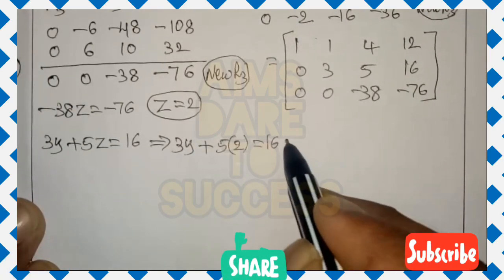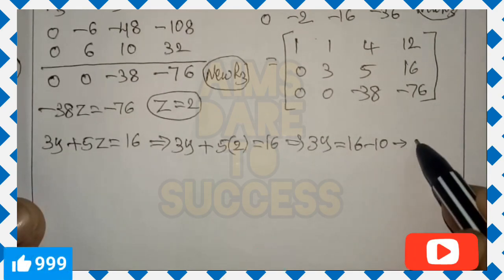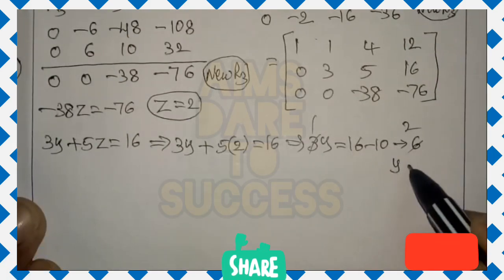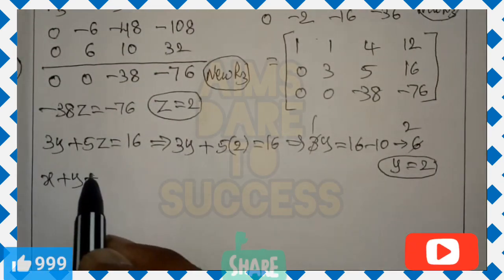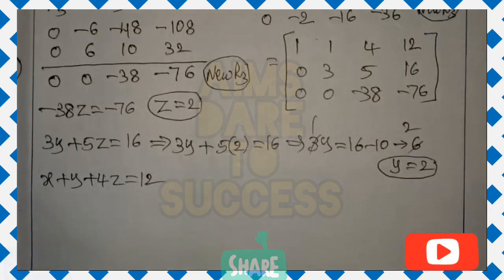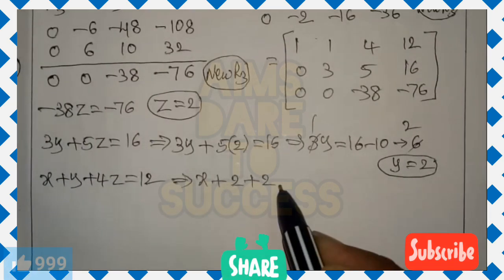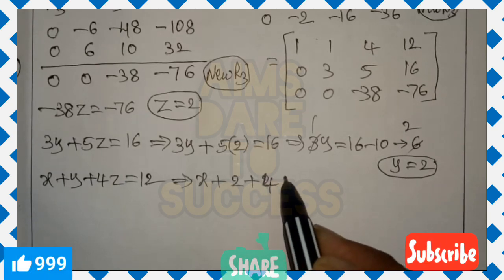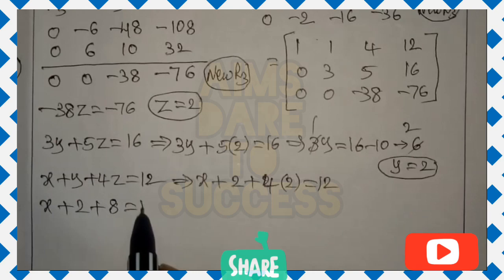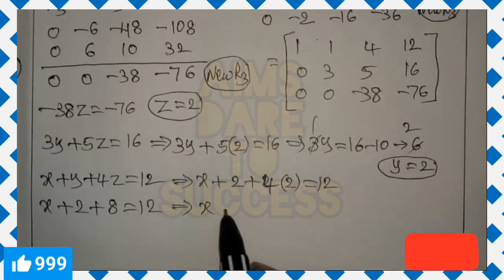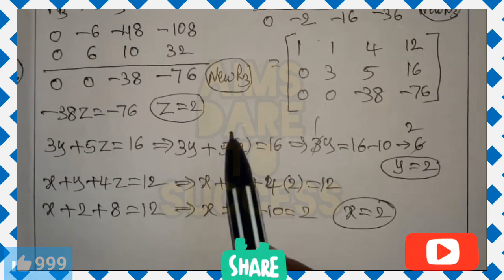From R2: 3y + 5(2) = 16, so 3y + 10 = 16, giving 3y = 6, so y = 2. Now use R1: x + y + 4z = 12. Substituting y = 2 and z = 2: x + 2 + 8 = 12, so x + 10 = 12, giving x = 2. If you are satisfied with this explanation, please subscribe to our channel and support us.